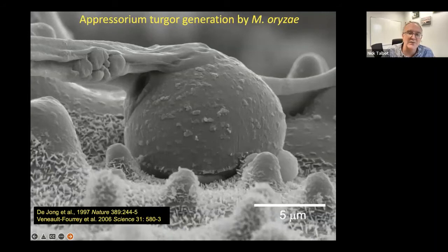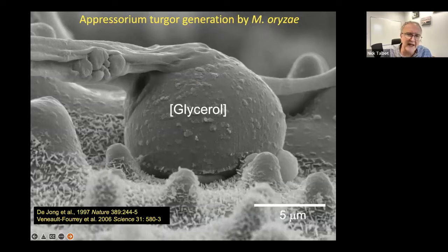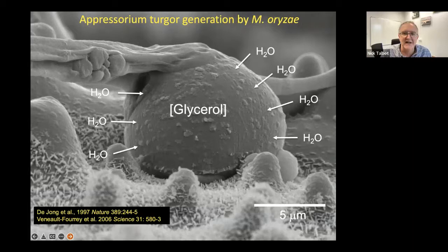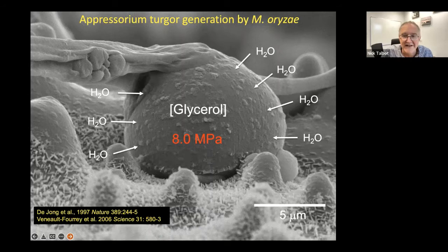Many years ago we discovered that glycerol accumulates to very high concentrations inside the appressorium — up to 3 molar glycerol. This draws water in by osmosis. The melanin layer reduces porosity, making the cell wall permeable to water but not to other solutes. Hydrostatic pressure increases up to 8 megapascals — 40 times car tyre pressure, or 80 atmospheres — and that is focused as protrusive force at the base, driving a narrow rigid penetration peg through the cuticle.